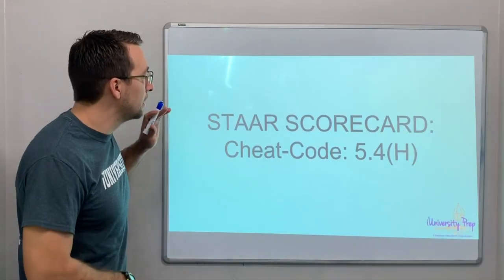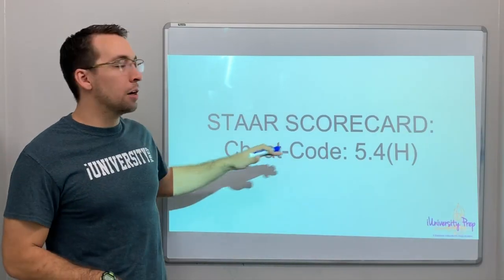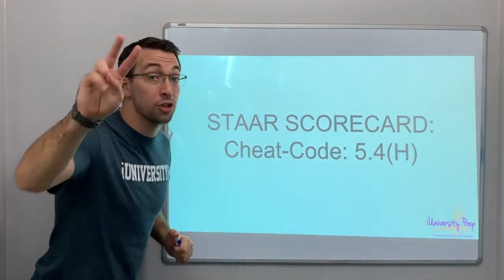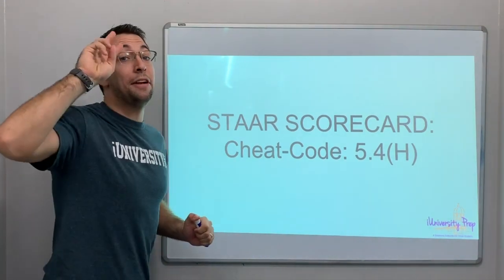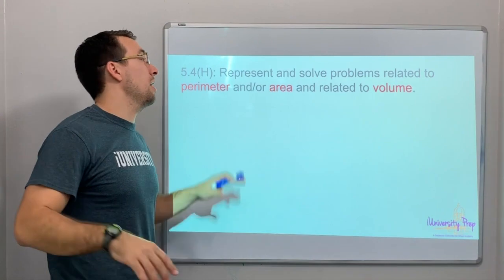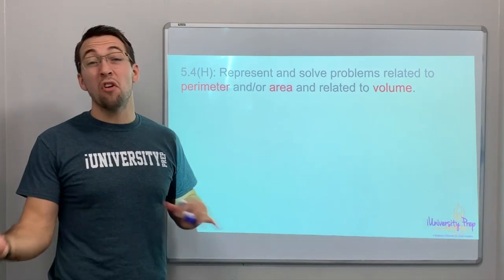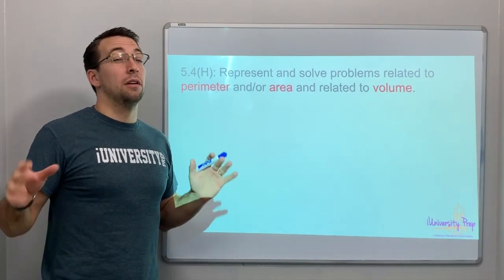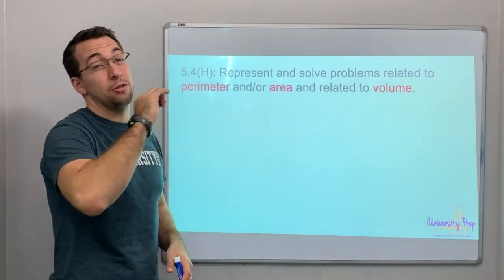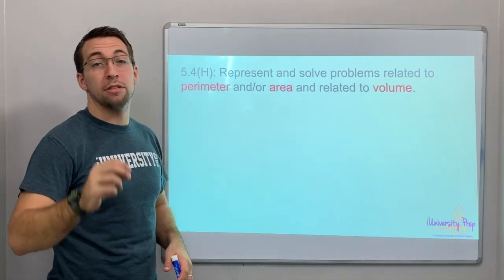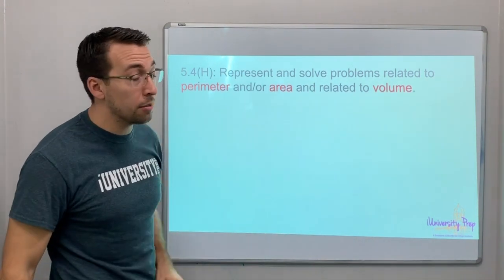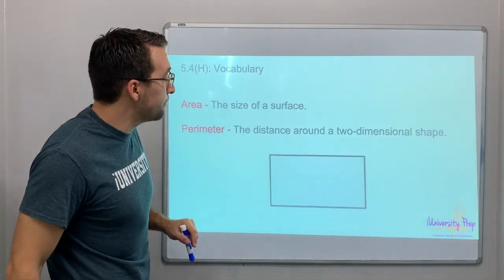Hello, everyone. Welcome back. Star Scorecard G-Code 5.4H, this is video number two. We're talking about geometry — area, perimeter, and volume. Those are hugely important vocab terms. You have to know them. This is video number two, so we're not going to go over the vocab here. Watch video number one for the vocab.